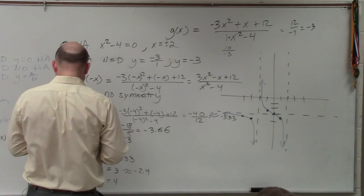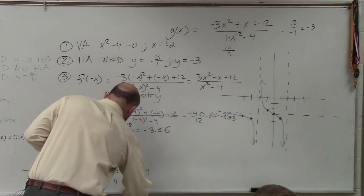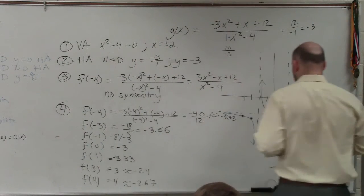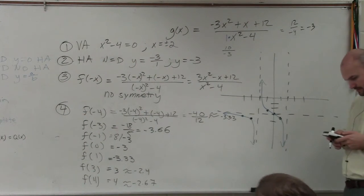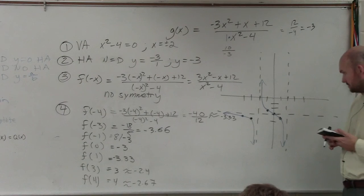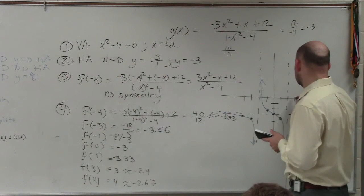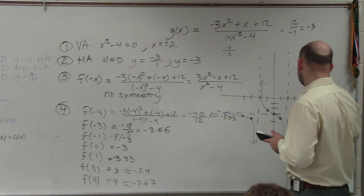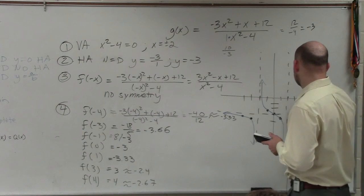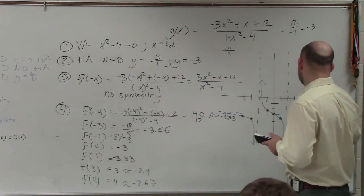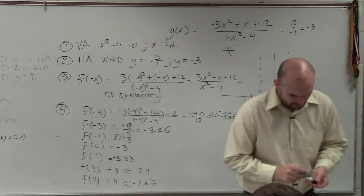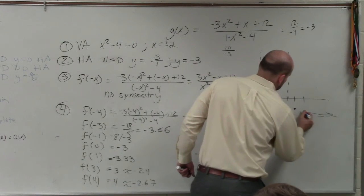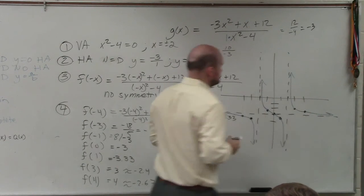And on my table function for 3, it's negative 2.4. And for 4, it's negative 2.67. So now you just connect these points.